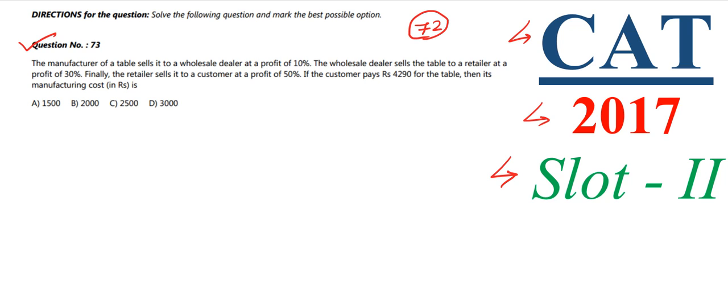Question number 73 says: the manufacturer of a table sells it to a wholesale dealer at a profit of 10%. The wholesale dealer then sells the table to a retailer at a profit of 30%. The retailer then sells it to a customer at a 50% profit.